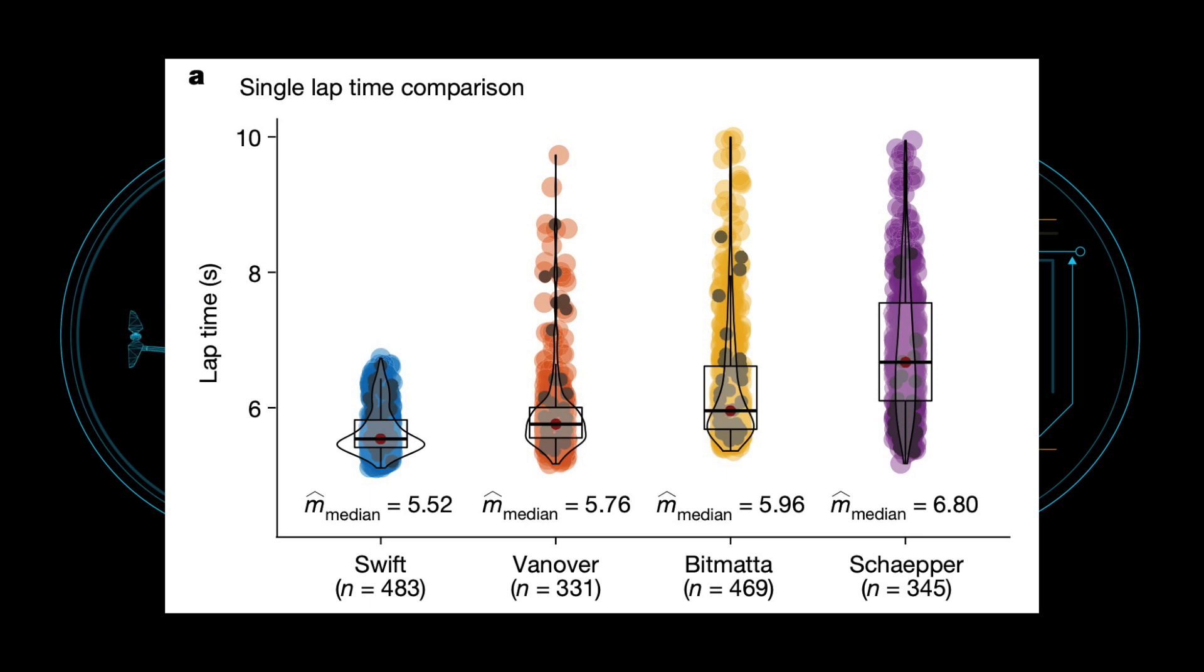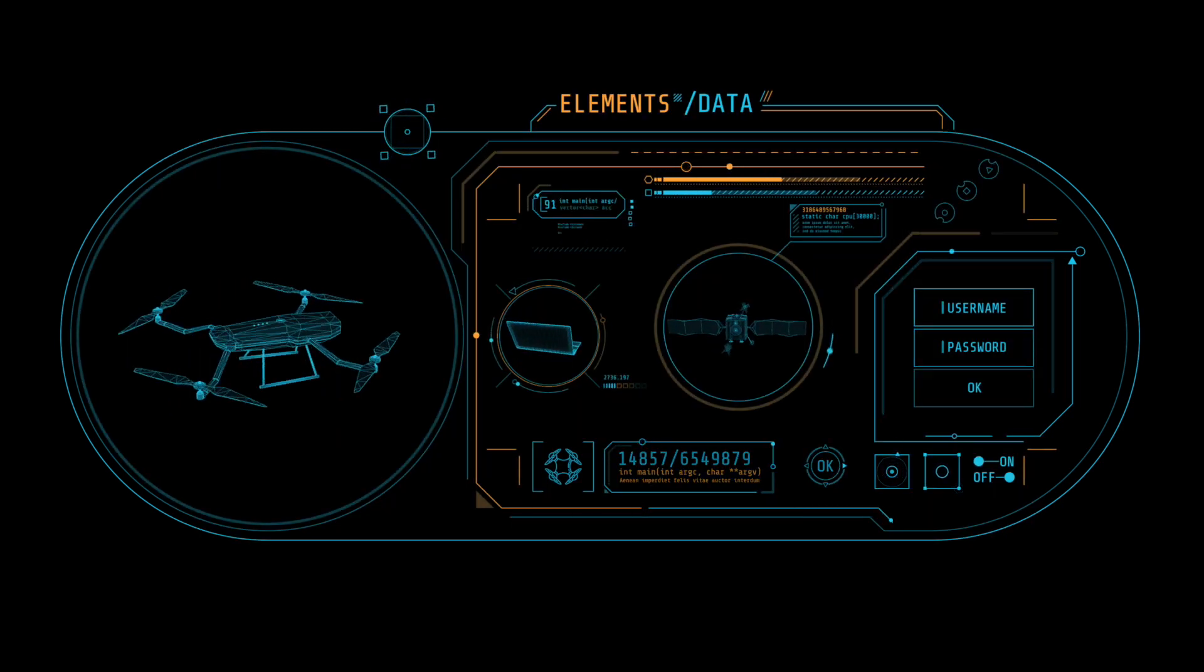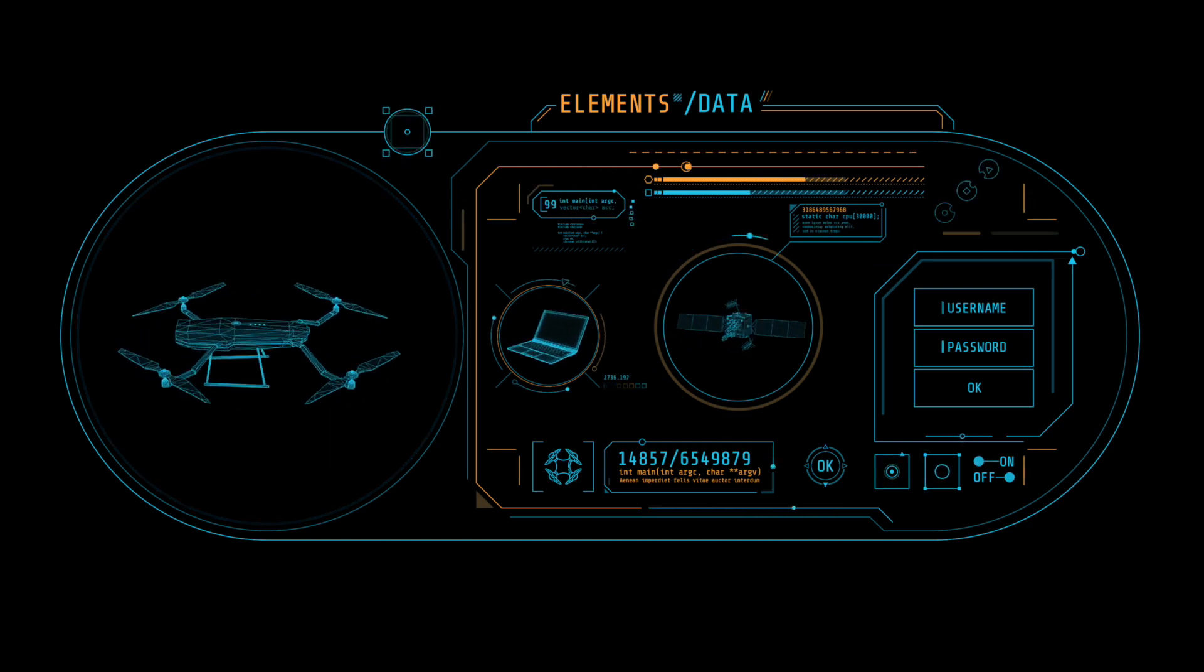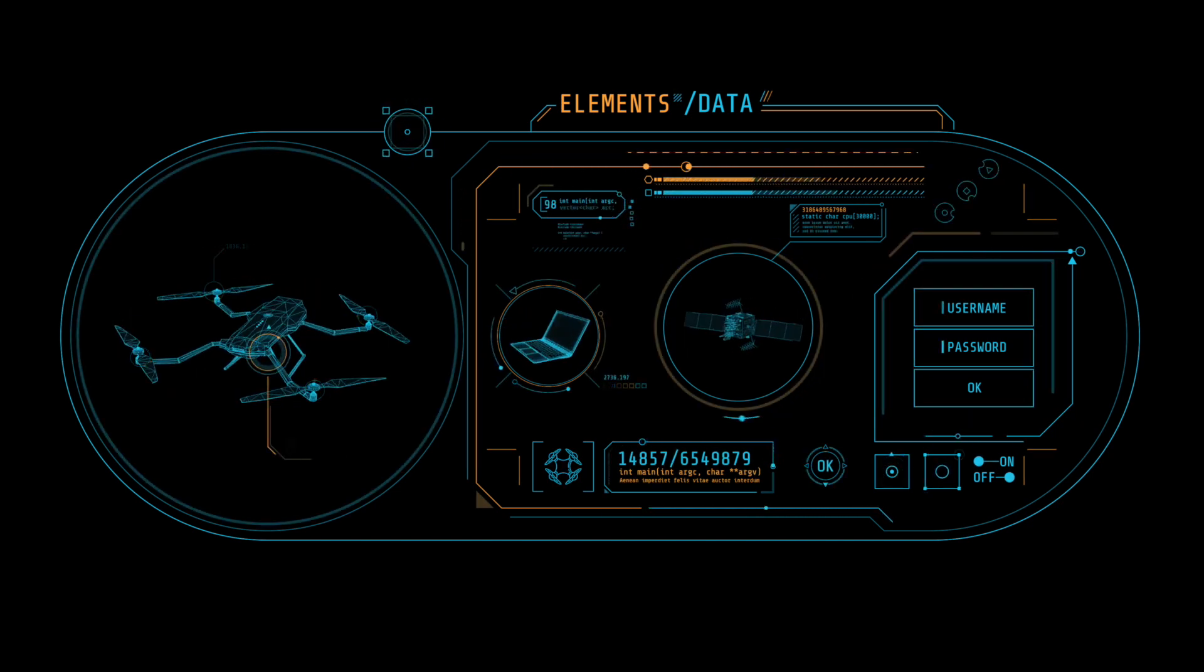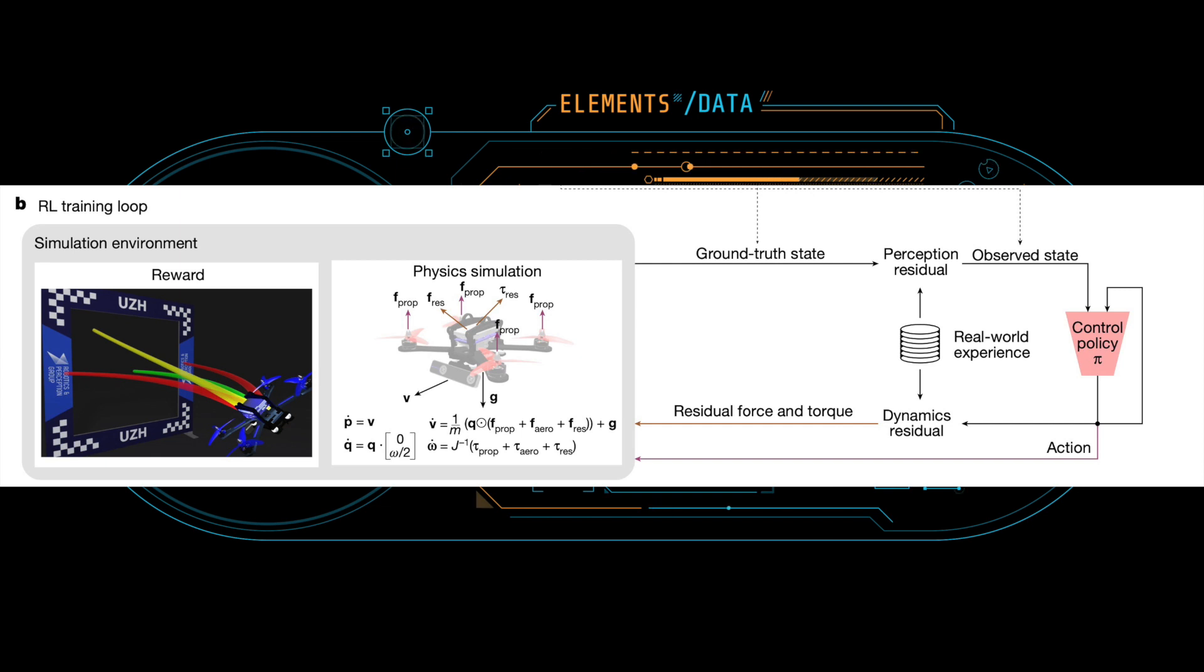In first-person view drone racing, professional competitors fly high-speed aircraft through three-dimensional circuits. Each pilot sees the environment from their drone's perspective, via video streamed from an onboard camera.